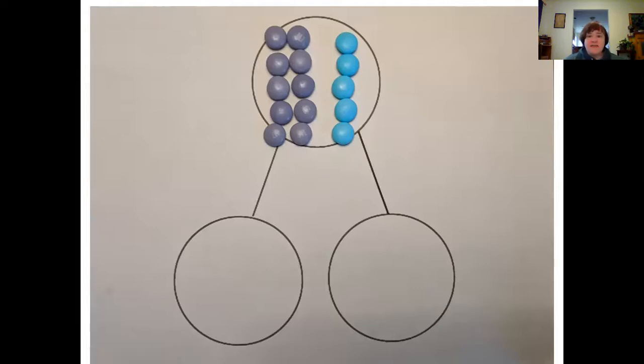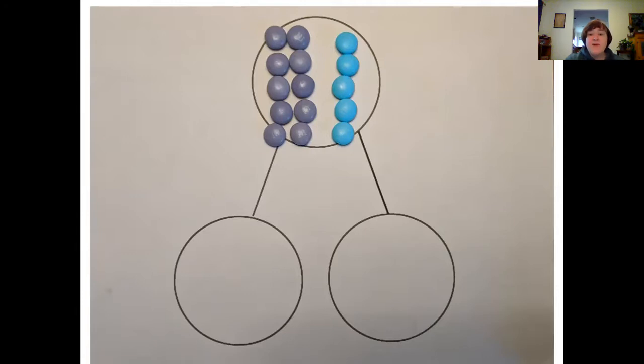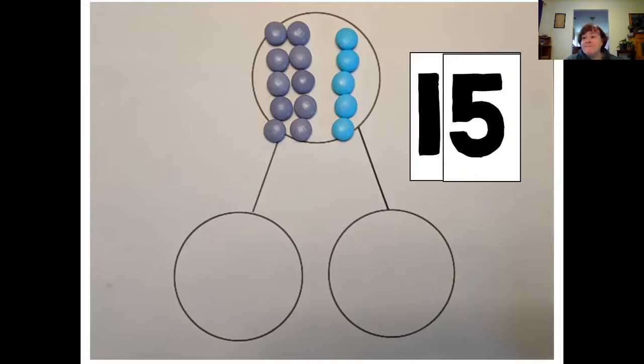But our number bond isn't complete, because this is the whole circle, all of them together. We have the two parts. So if we think back to what we just saw, what were the two parts? Well, that's when we have to put in the 10 and the five. 10 and five are the same as the 15 that are in the top. So we can put our hide zero together. And there we have that 15. It's all the same. 15 is the same as the 10 and the five.